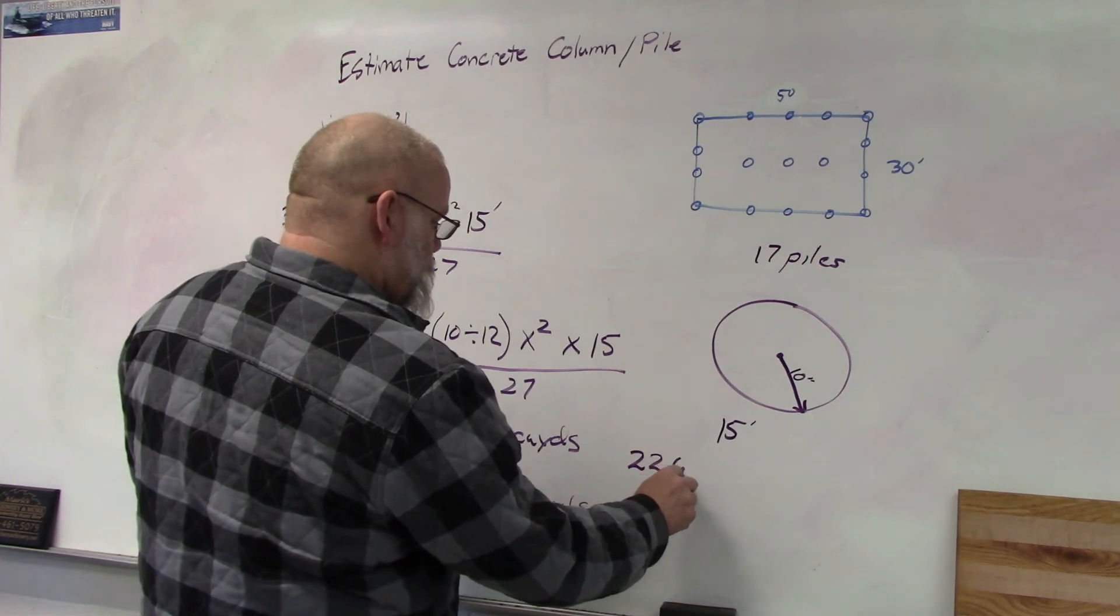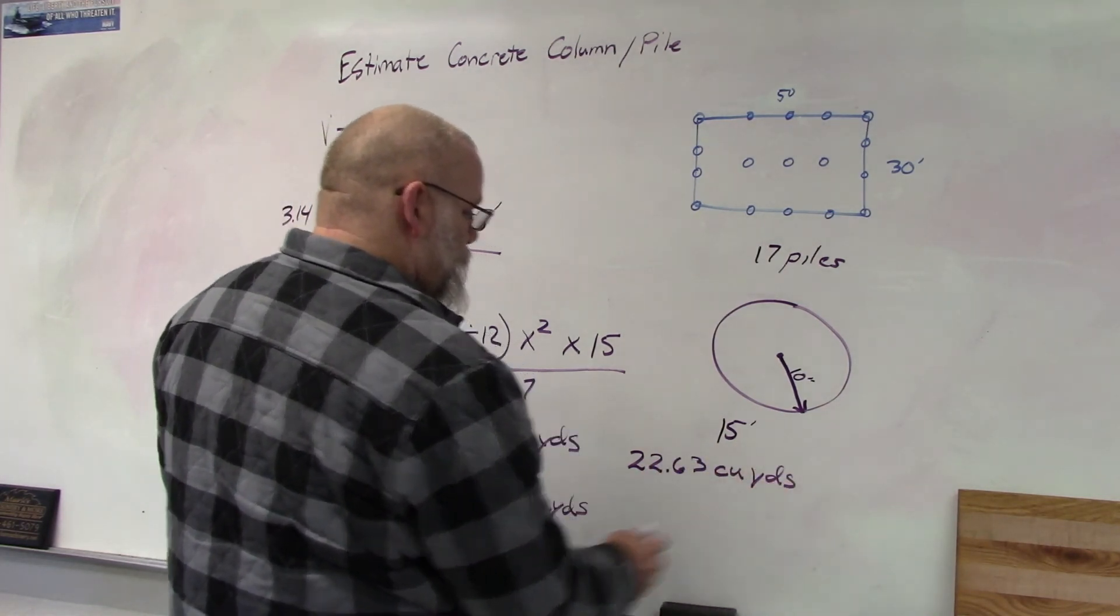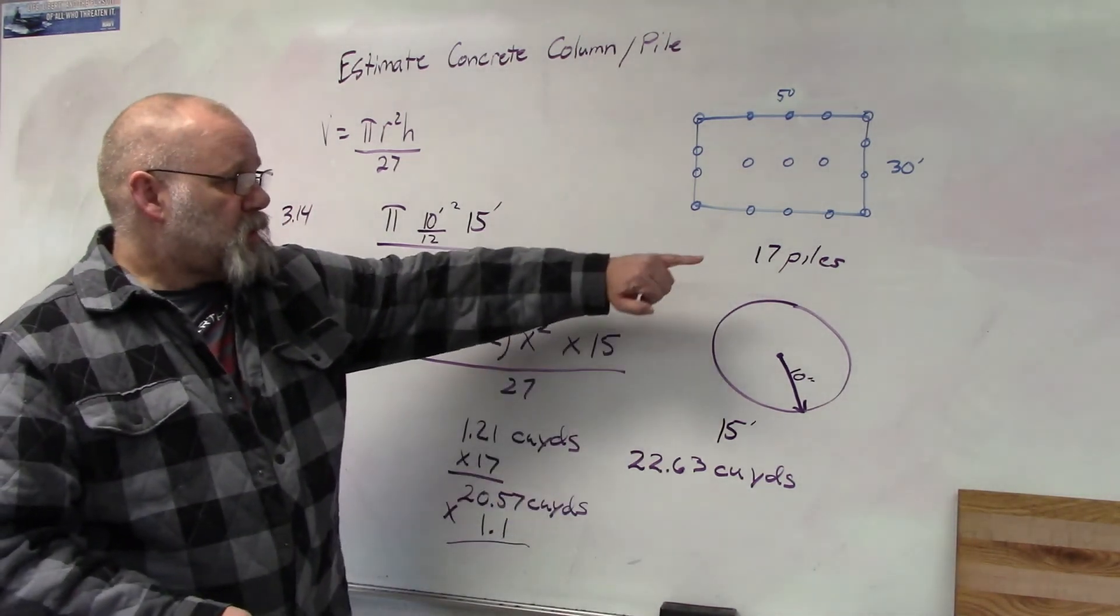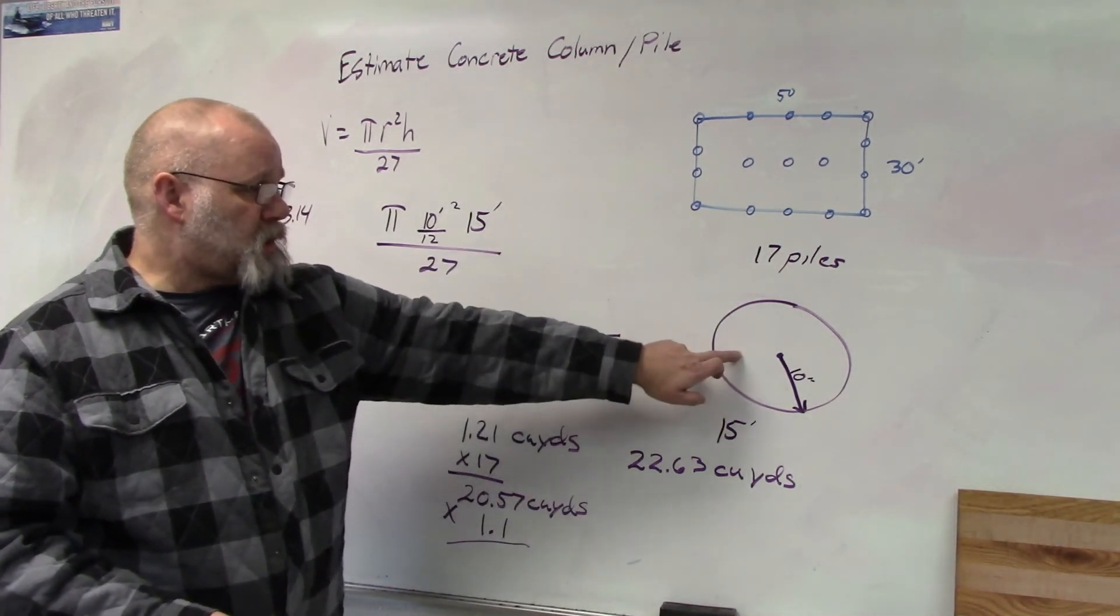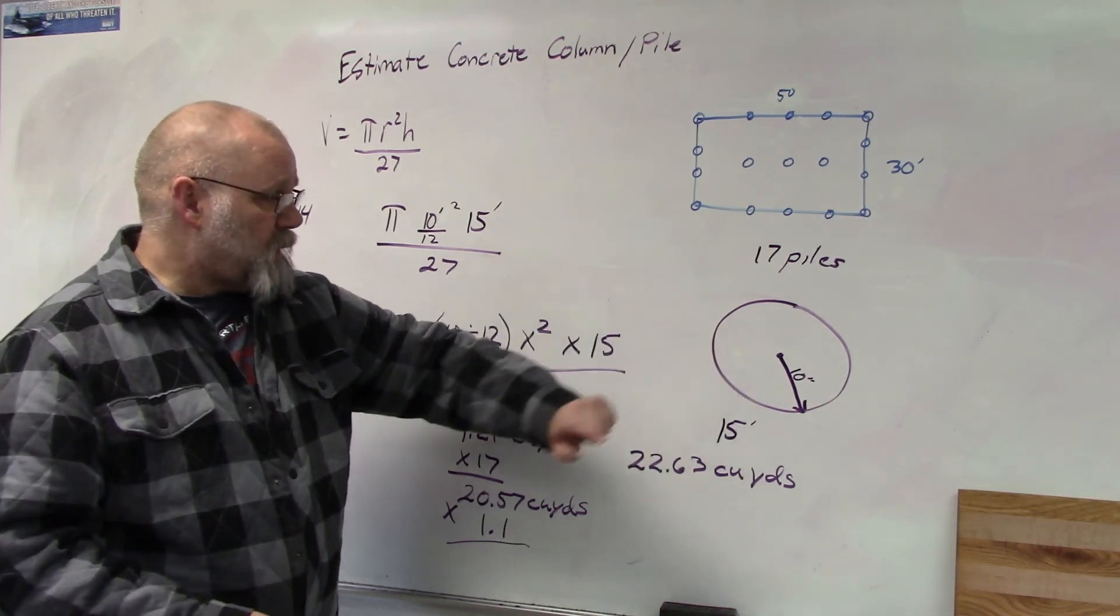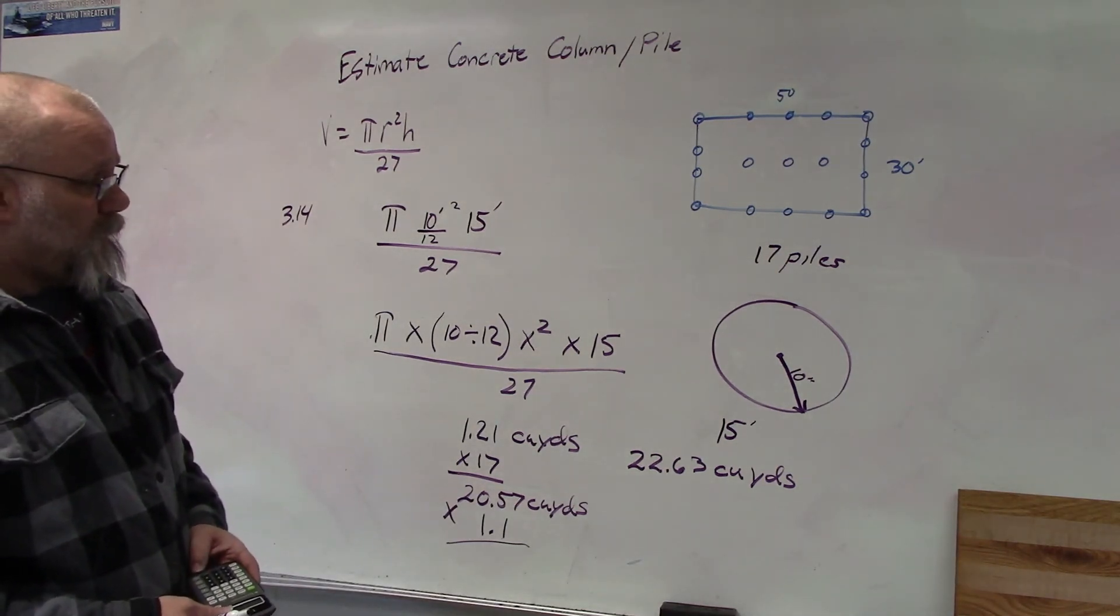So 20.57 times 1.1 equals 22.63. So 22.63 cubic yards. So it would take that much concrete to fill up 17 of these piles, with a radius of 10 inches and a depth of 15 feet.